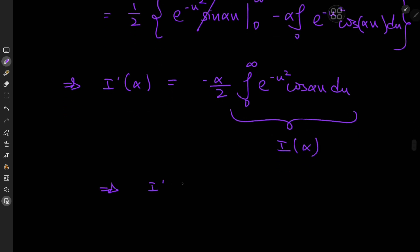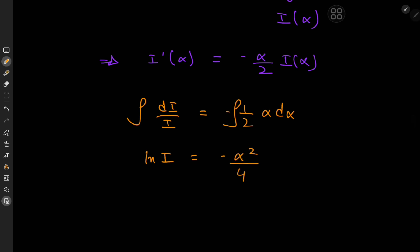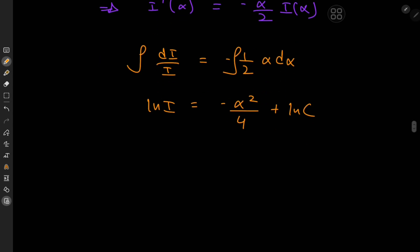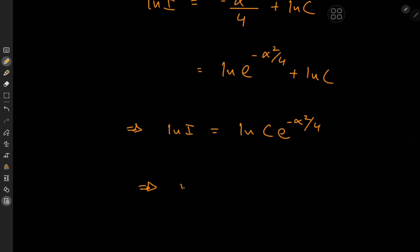So we have a really nice separable first order differential equation: I prime equals negative alpha over 2 times I. To solve it, we write dI over I equals negative one half alpha d alpha. Integrating gives log I on the left, and negative alpha squared over 4 plus a constant on the right. Writing the constant as log c, we get log I equals log of c times e to the negative alpha squared over 4.